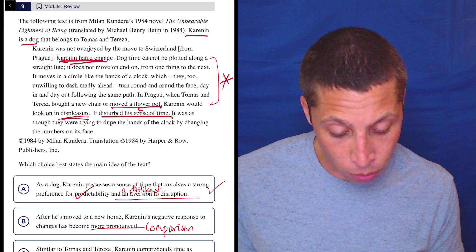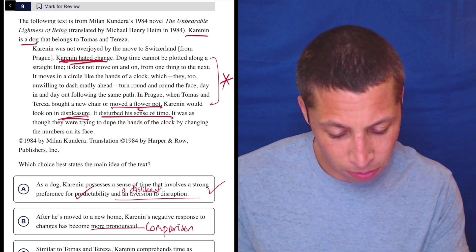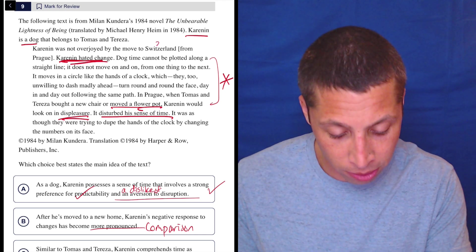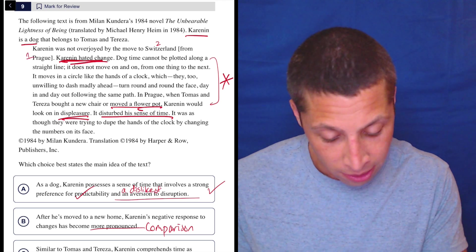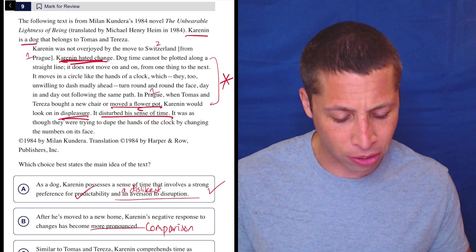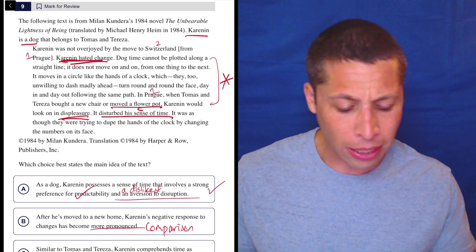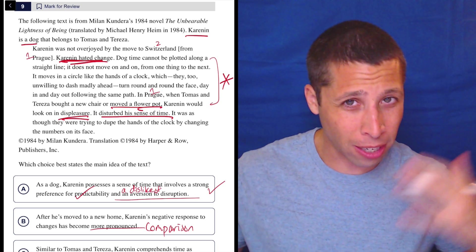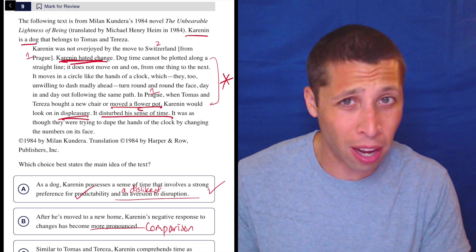So they moved to Switzerland from Prague. So this is two and this is one. So when they're in Prague, it still seems like the dog is upset by change. Are they really comparing Switzerland to Prague? It seems like they're kind of talking about them all at once. They're talking about the dog, not the place.